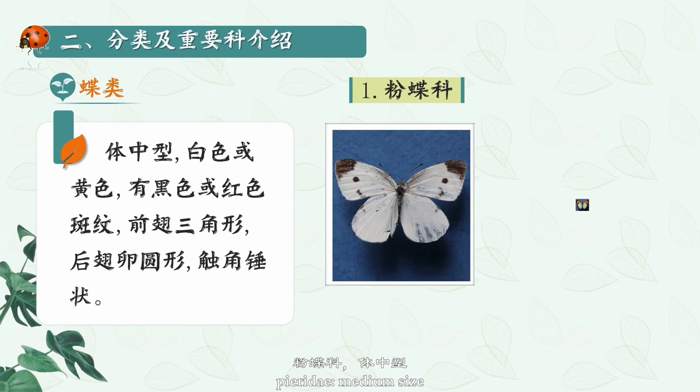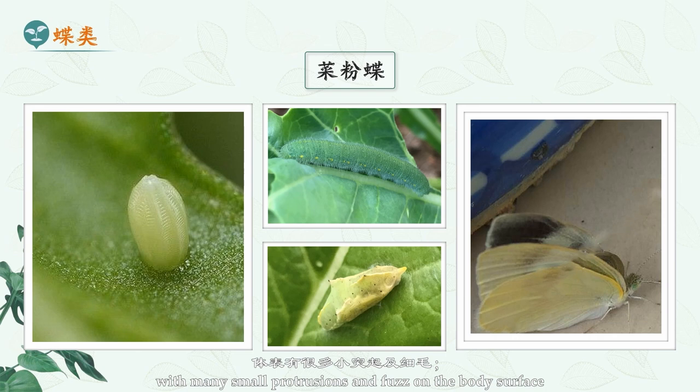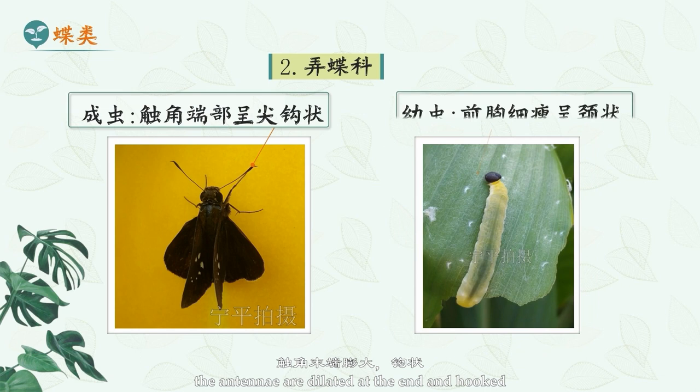There are the following families of butterflies. Pieridae: medium size, wings are mostly white or yellow with black or red spots. The larvae are primarily green, with many small protrusions and fuzz on the body surface. Hesperidae: medium or small in size, stout and dark in color. The antennae are dilated at the end and hooked. Larvae have large heads and thin necks, and are fusiform.